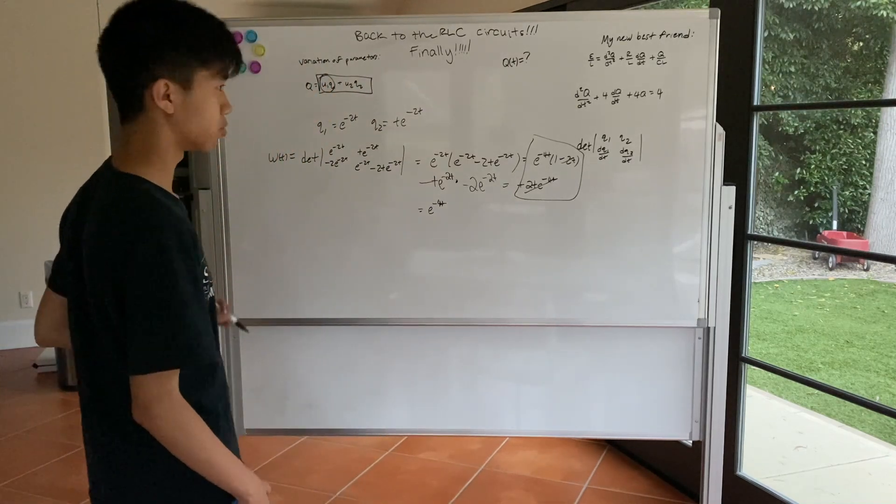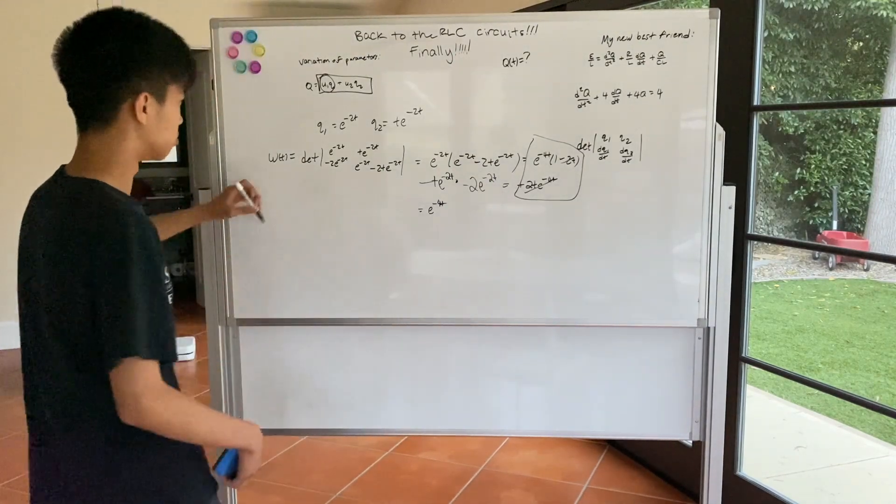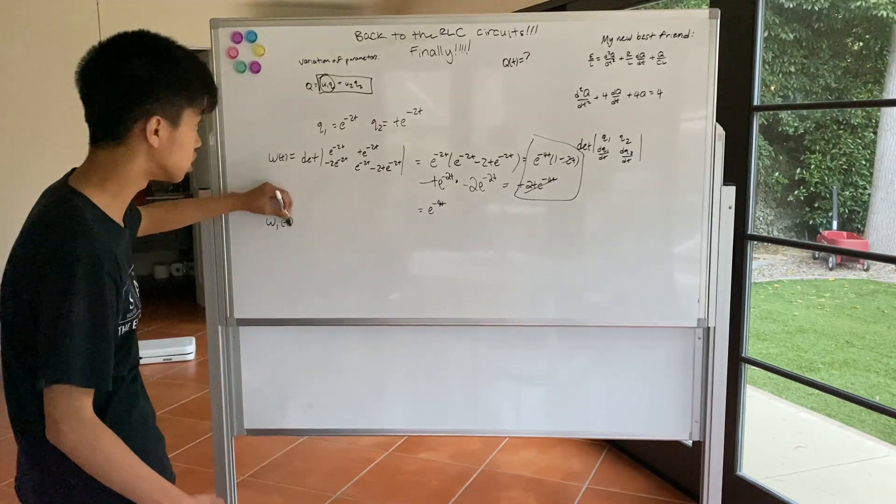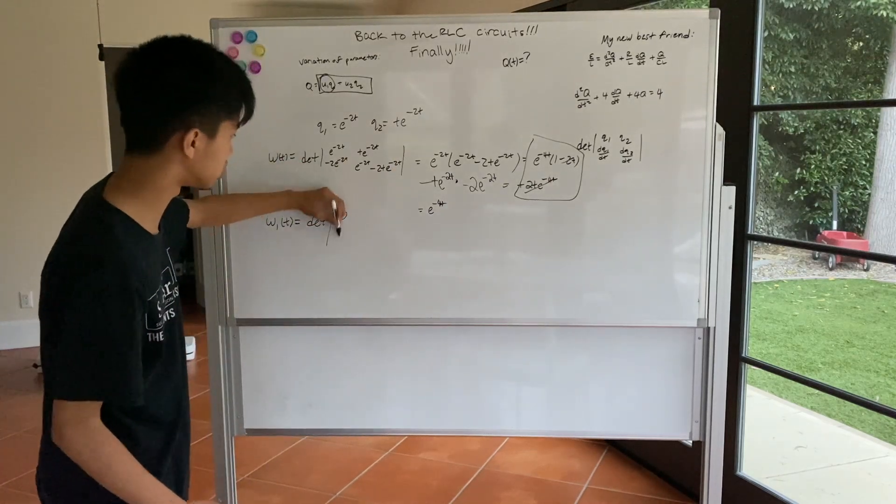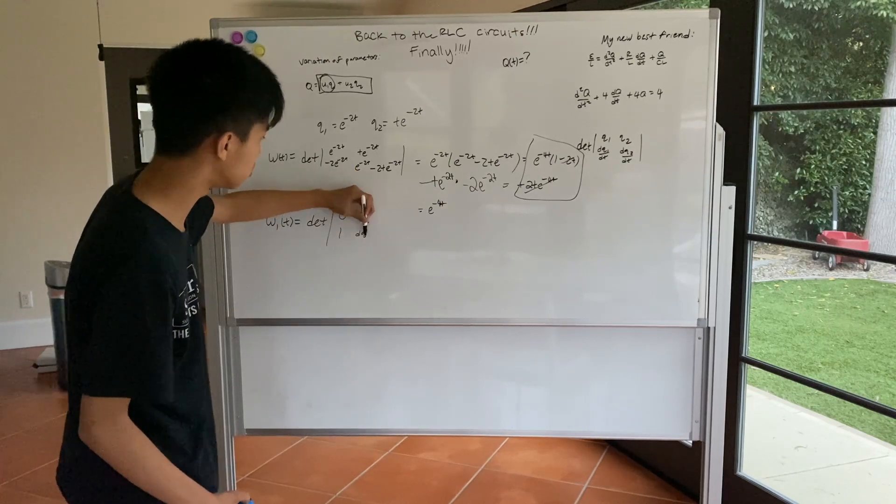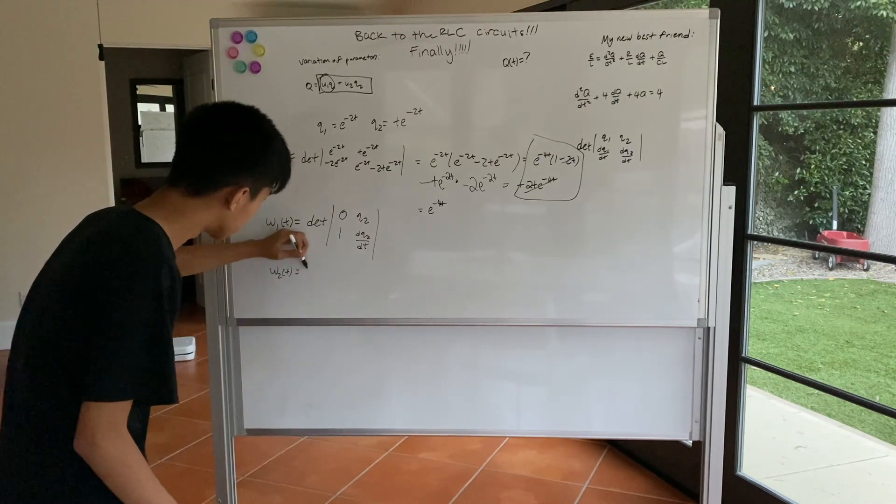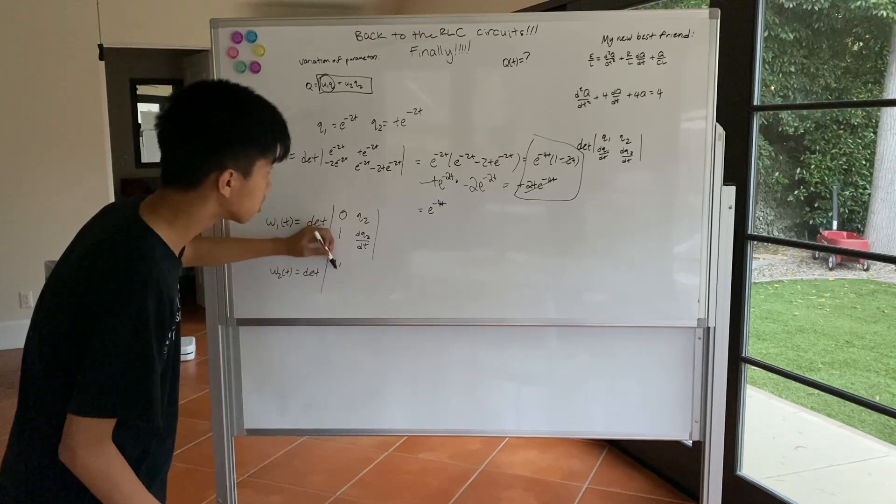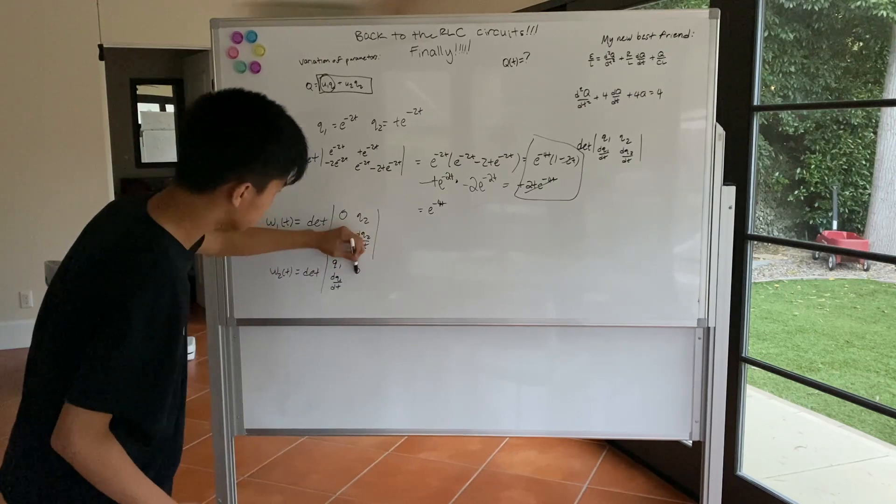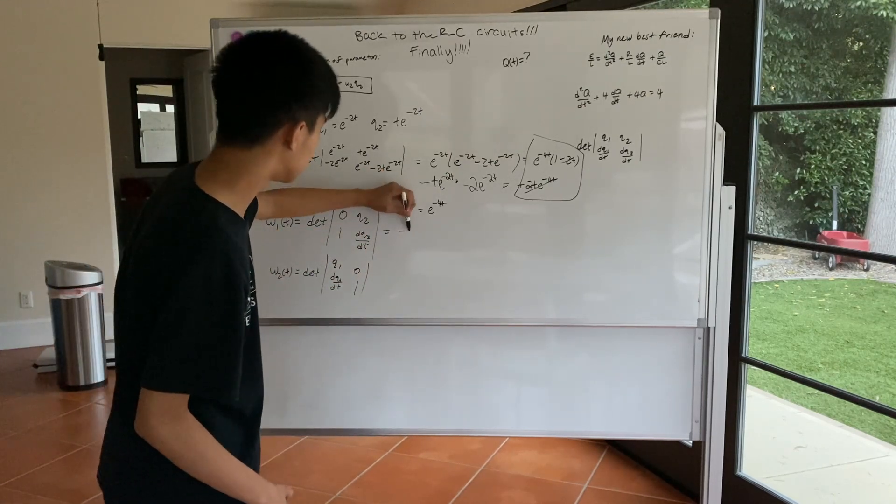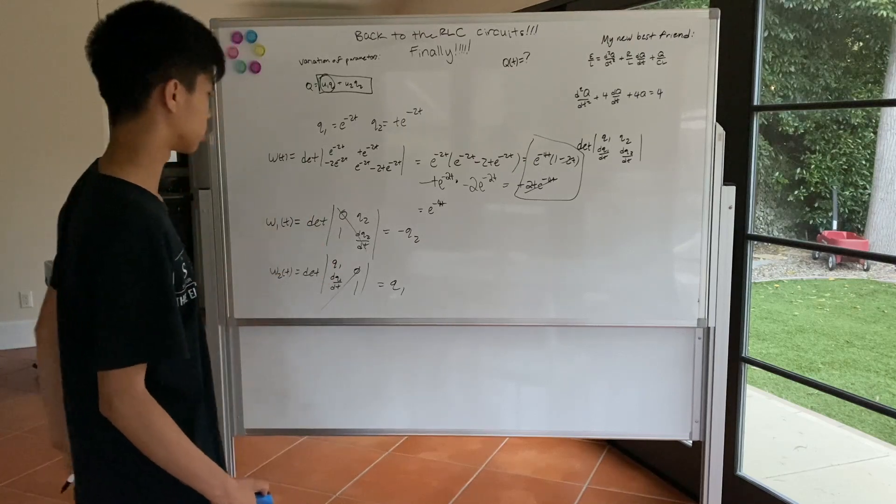So we now know that, but what the hell is the first Wronskian and the second Wronskian? Well that's actually quite simple. So Wronskian number 1 is equal to the determinant, but then the first column will just be replaced with 0, 1. And then likewise for the second Wronskian, you get the determinant but then the second column will be x'd out and replaced with 0, 1. So you just get 0, 1 here. So pretty easy: negative Q2, positive Q1, because these two multiply these two multiply into 0.